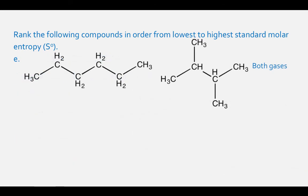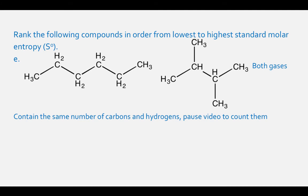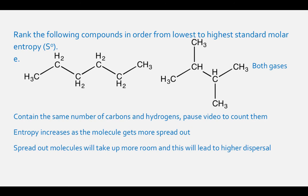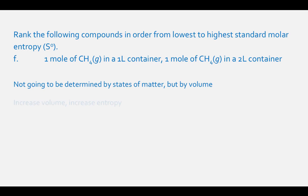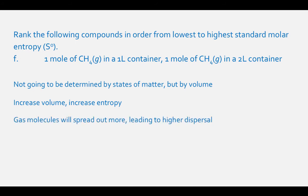For letter E, we have two different structural isomers — hexane and 2,3-dimethylbutane — which contain the same number of carbons and hydrogens. Entropy increases as molecules get more spread out rather than more compact, because spread-out molecules take up more room and have higher dispersal. So hexane will have the higher entropy compared to 2,3-dimethylbutane. For letter F, we have the same gas in different volume containers. When the volume of the container that gas is in increases, so does standard molar entropy, because the molecules will spread out, leading to more dispersion. The order is: CH4 gas in 1 liter < CH4 gas in 2 liters.